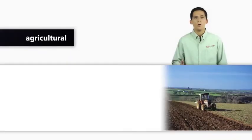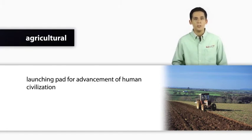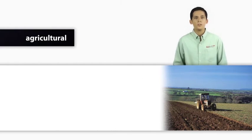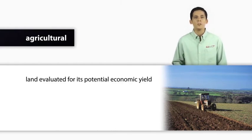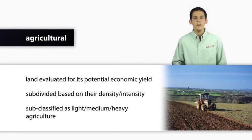Agricultural land uses are what began it all. As we reviewed earlier, the invention of agriculture was the launching path for the advancement of human civilization and also was the first time land was evaluated for its potential economic yield. Agricultural uses are typically subdivided based on their density or intensity and can be subclassified as light, medium, or heavy agriculture.